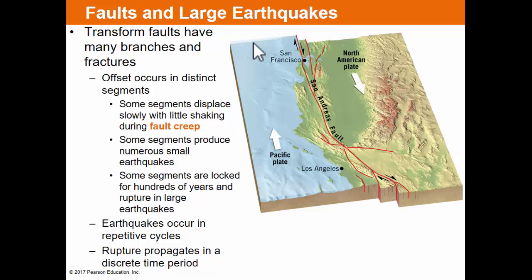The San Andreas Fault has lots of distinct segments. Some segments displace very slowly with what they call fault creep. Some segments produce lots of tiny earthquakes that may not even be felt. And some segments are locked — when the frictional forces are overcome, they release with very large earthquakes. These earthquakes tend to occur in fairly repetitive cycles, so you can see one area have an earthquake and then, after a set time frame, expect that same area to have another similar earthquake.